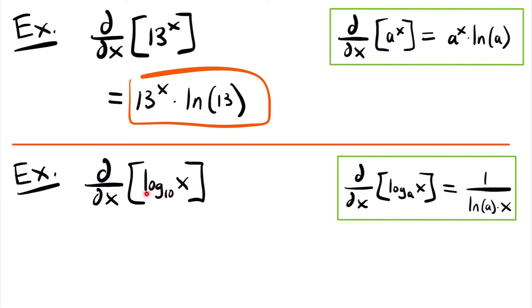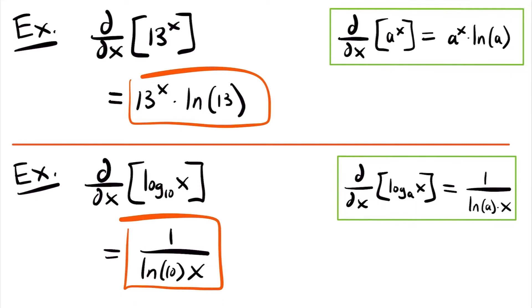In order to find the derivative, we are going to need to use this derivative rule, which says that the derivative of a log function with a base of a is equal to 1 divided by the natural log of a times x. In this case, a, our base, is equal to 10. So this will be equal to 1 divided by the natural log of 10 times x, and that is the derivative of the log function with a base of 10.